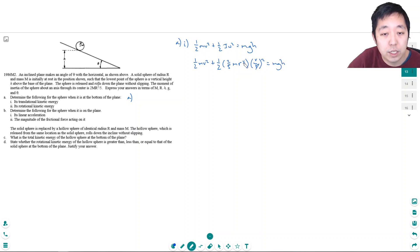The r squared cancel here. The m's also all cancel on all of these. So I get one-half v squared plus one-fifth v squared equals gh. One-half plus one-fifth is seven-tenths. So I get seven-tenths v squared is equal to gh. So v is equal to square root of ten-sevenths gh.